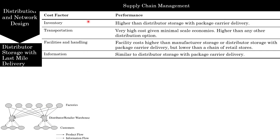Distributor storage with last mile delivery requires higher inventory than other options except retail stores because of very low aggregation. From an inventory perspective, warehouse storage with last mile delivery is suitable for relatively fast-moving items needed quickly and for which some level of aggregation is beneficial — auto parts required by car dealers fits this description. Among all distribution networks, transportation costs are very high here because most delivery is done to individuals. Package carriers aggregate delivery across many retailers and achieve better economies of scale than a distributor or retailer attempting last mile delivery.